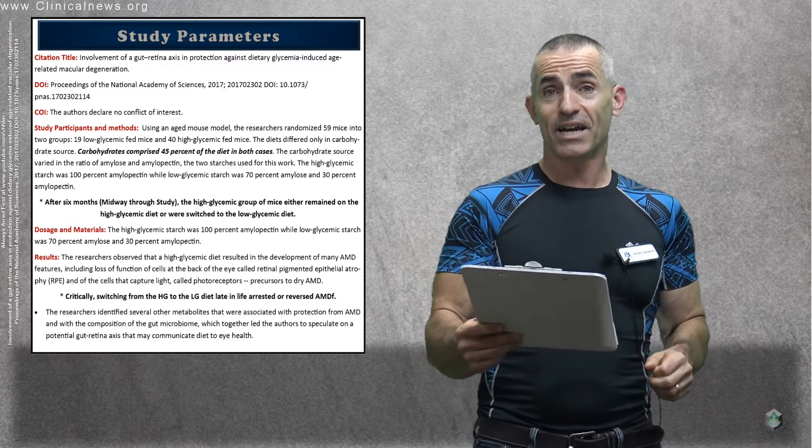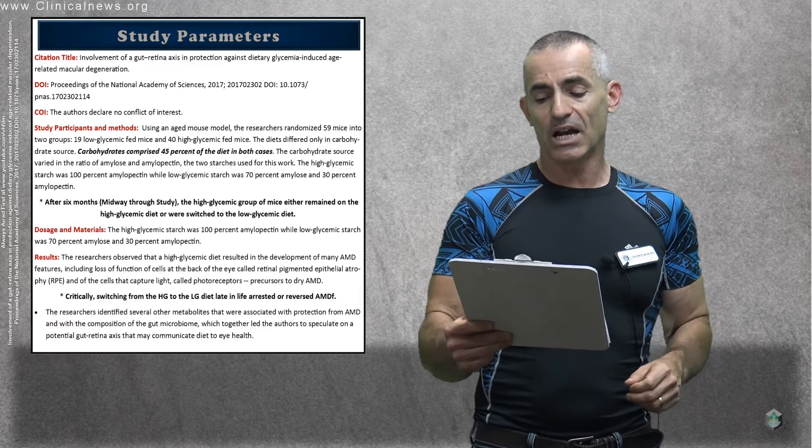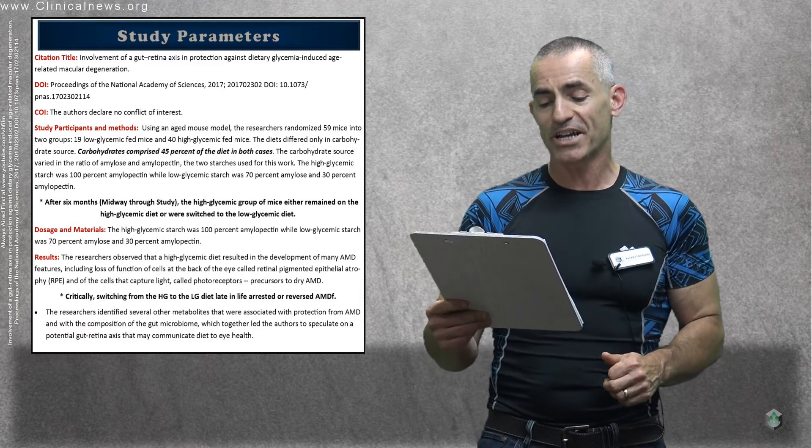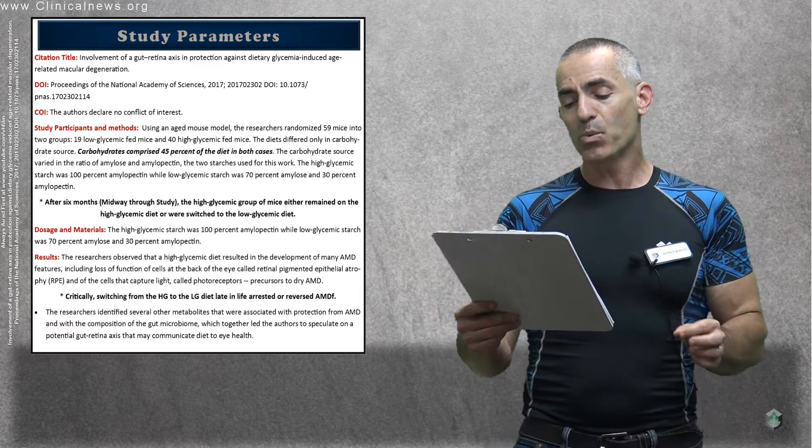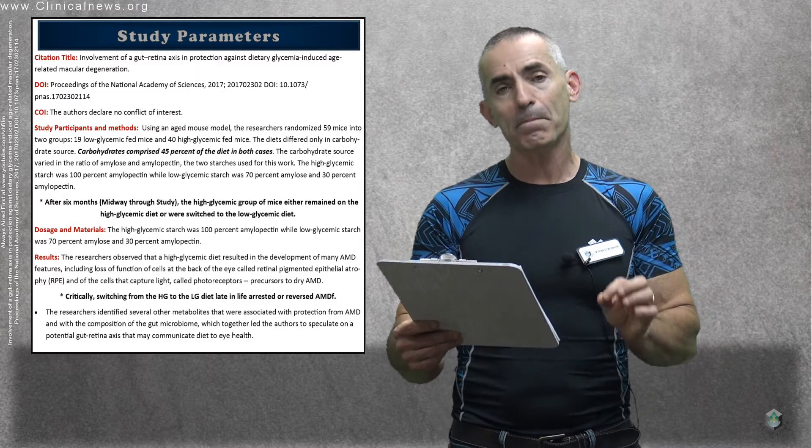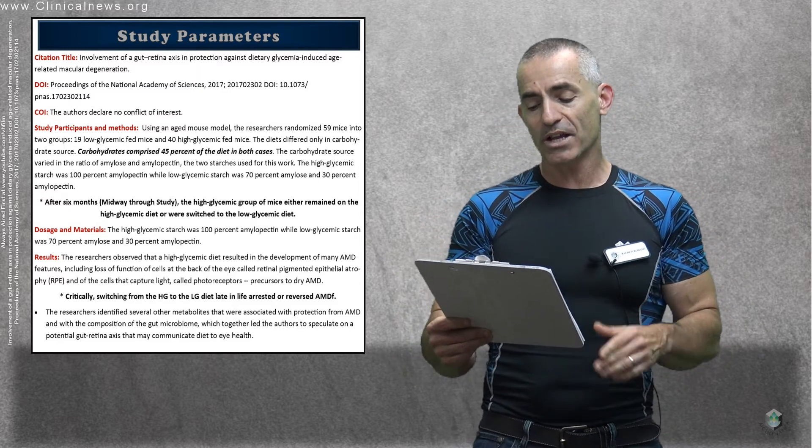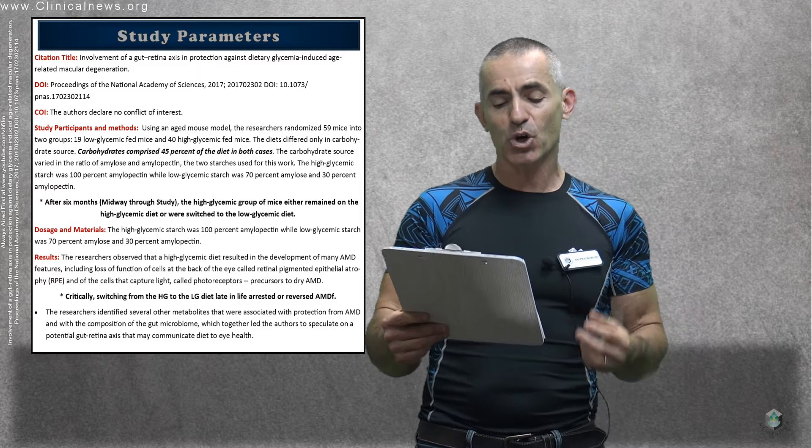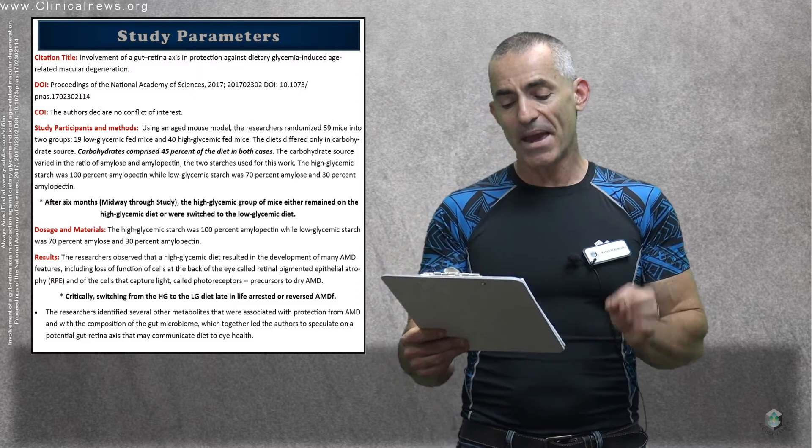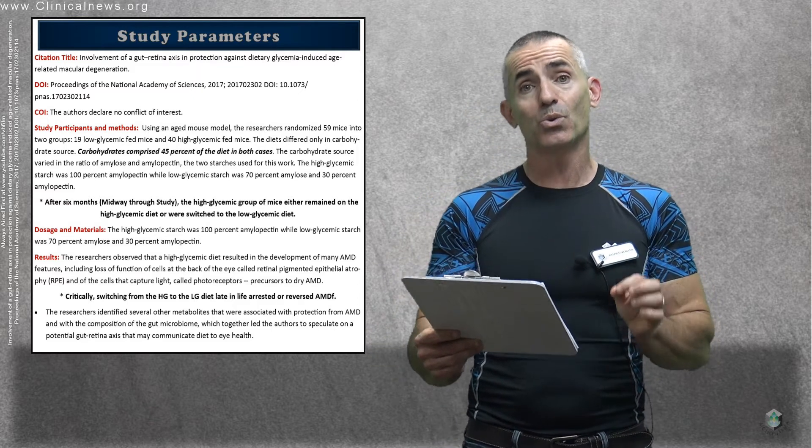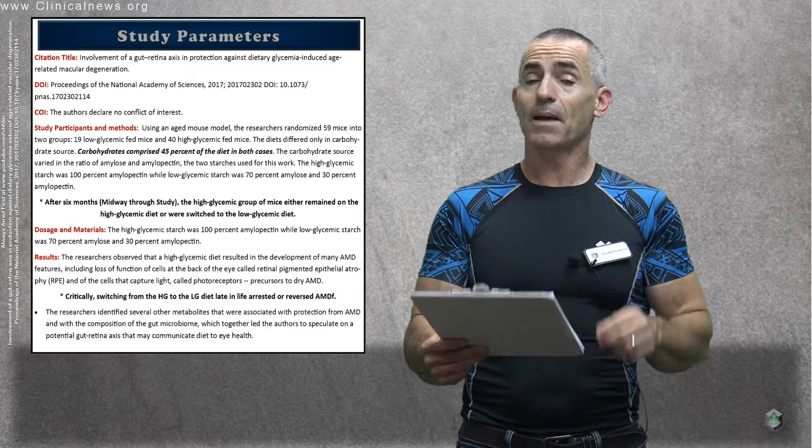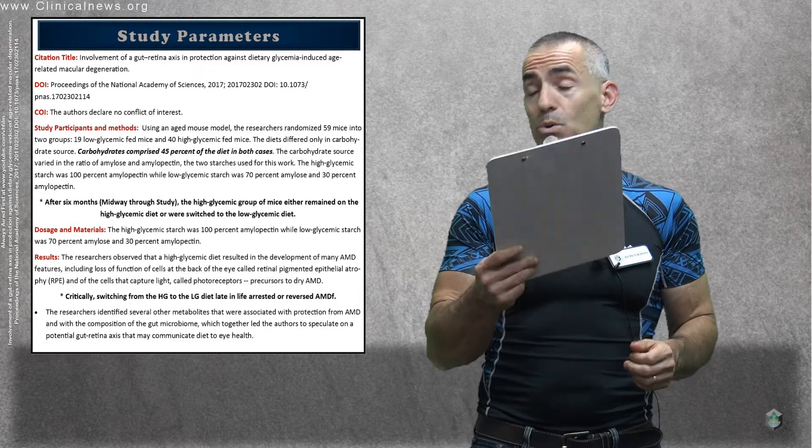The researchers identified, as a special note, several other metabolites that were associated with protection from AMD and with the composition of the gut microbiome, which together led the authors to speculate on potential gut-retina axis that may communicate diet to eye health. That's a hypothesis that needs to be worked out in future studies.